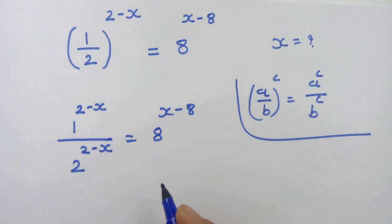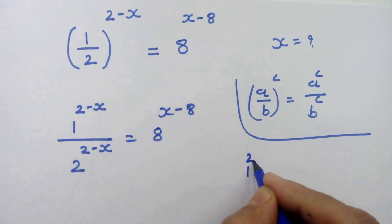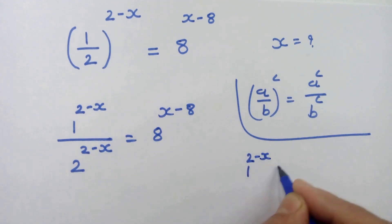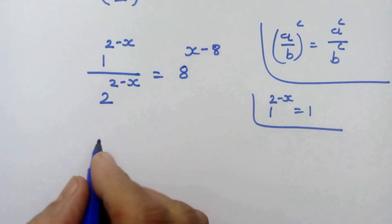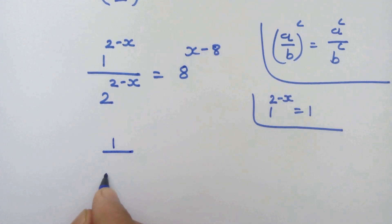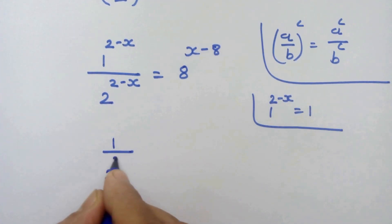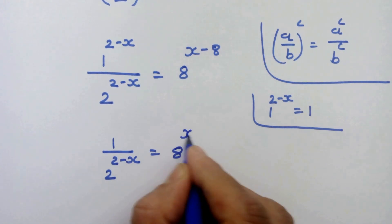Now, any power to 1 will result in 1 itself. So here, 1 raised to 2 minus x is equal to 1. So we can write 1 upon 2 raised to 2 minus x is equal to 8 raised to x minus 8.